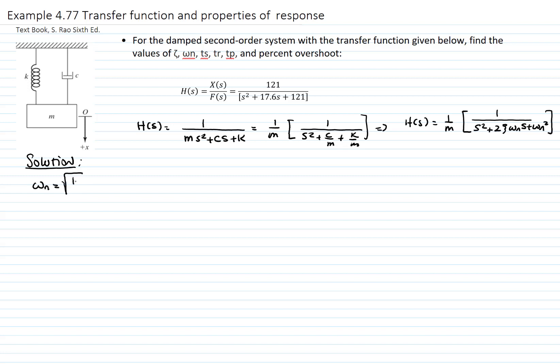The natural frequency is square root of k over m. And as you see, it's the last term of the transfer function given, which will be then square root of 121, which is 11 radians per second.